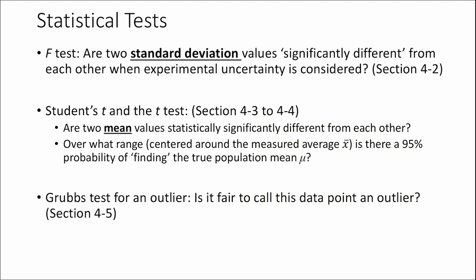I'll frame them as questions. The F-test tells you: if you have two sets of measurements, are the standard deviation values significantly different from each other? Is one measurement more precise than the other? That's what the F-test tells you. The T-test tells you: are your mean values different from each other? This is the one we want to do most of the time. It turns out you need to do the F-test first before you can do a T-test. Ultimately this is the big hitter — we want to know, if you measured sample A and sample B, do they have the same answer? Are your mean values the same within some error level? We use the phrase 'statistically significant' or 'significantly different,' which means: do the test and see if it passes.